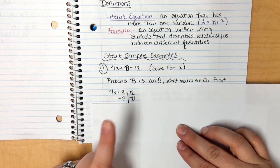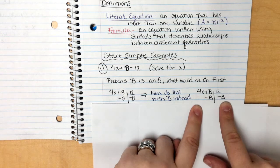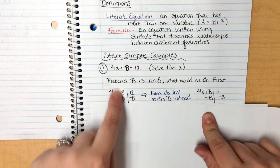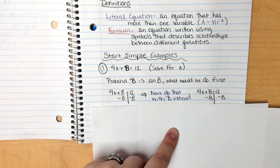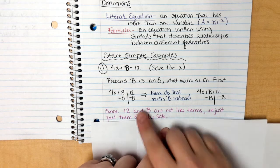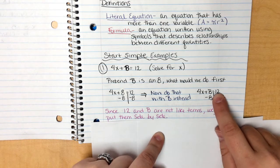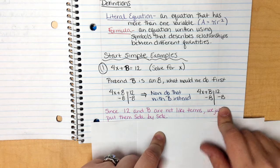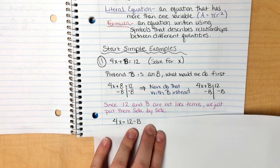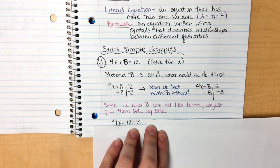But remember, this is pretend. We're not actually doing this in our head. What we're actually doing is we're doing it with b. Notice, I did nothing different. I just changed 8 to say b in its place. Nothing changed. I still subtracted 8, just like I'm subtracting b over here. So since 12 and b are not like terms, we just write them side by side.